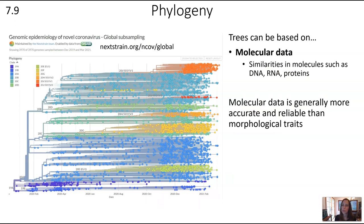Another way to develop trees is based on molecular data — similarities in DNA, RNA, and proteins. On the left is a complex tree looking at almost 4,000 coronavirus genomes sampled between December 2019 and March 2021, showing branching patterns of different strains and when and where they evolved. This helps scientists and epidemiologists track the movement of viruses around the globe to help control the spread. Generally, molecular data is more accurate and reliable than morphological traits.